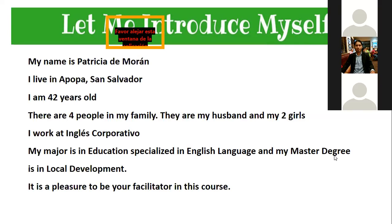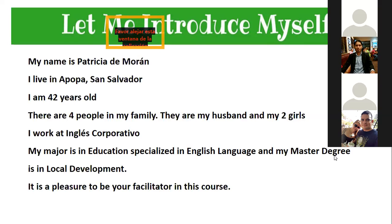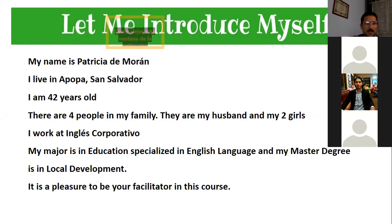Carlos Escobar, would you like to continue introducing yourself? Hello everybody. My name is Carlos Escobar. I live in Santa Ana. I am 36 years old. There are three people in my family — my wife and my daughter. I work at Cartelone Construcciones Civiles. My major is industrial engineering with a specialty in safety, health, and environment. It's a pleasure to be your classmate. Welcome, thank you very much.